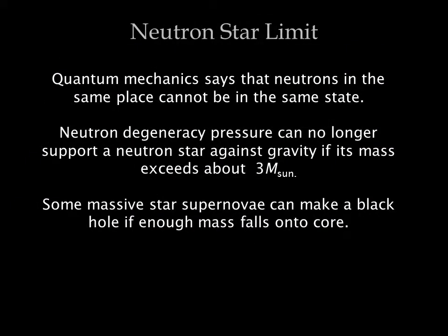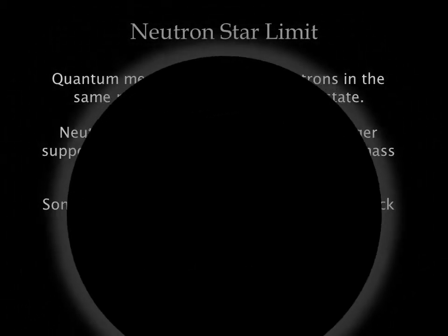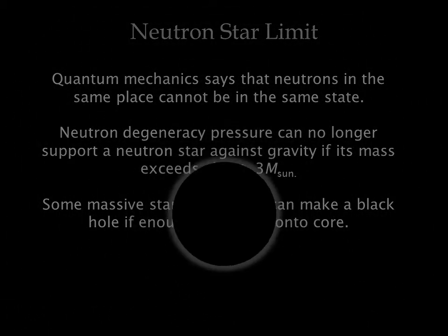Let's go back to where we left off with the death of a massive star. We had a neutron star held up by neutron degeneracy pressure. If the mass of the neutron star exceeds three solar masses, neutron degeneracy pressure can no longer support the star against gravity, and the neutron star will collapse, turning into a black hole.